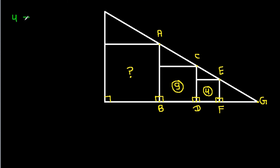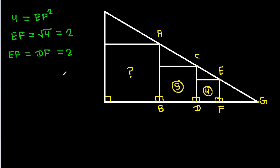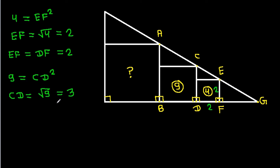The area 4 equals EF squared, which means EF equals root of 4, that is 2. And EF equals DF, so DF is also 2. The area 9 equals CD squared, so CD equals root of 9, that is 3. And BD equals CD, so BD is also 3.